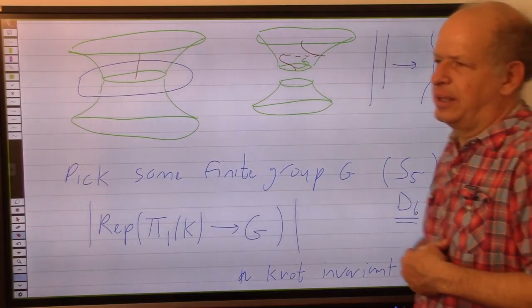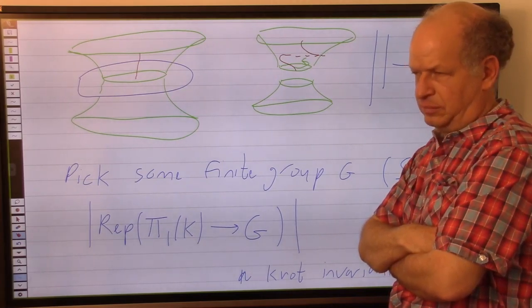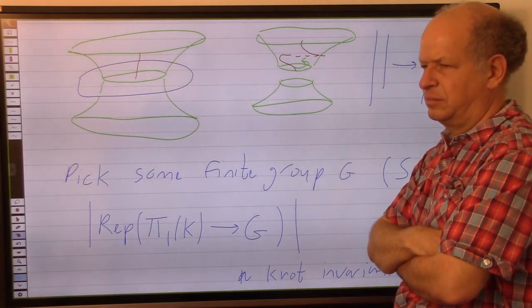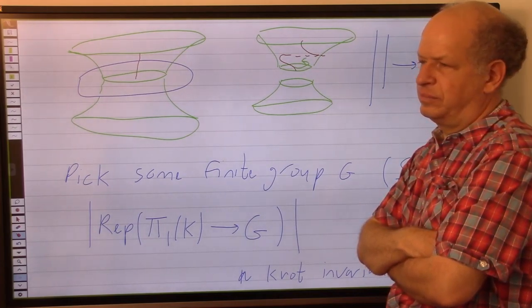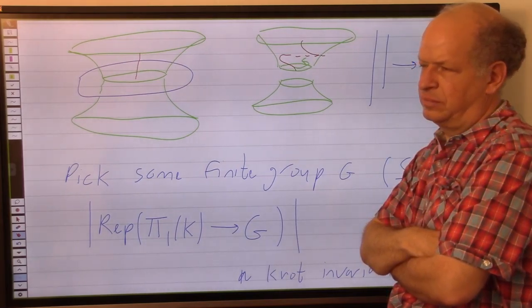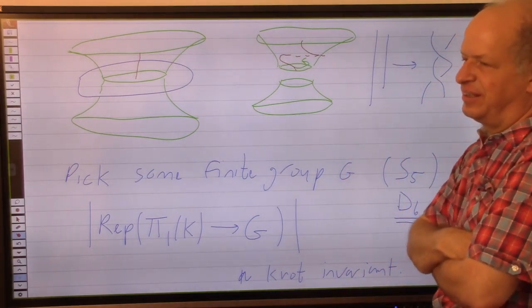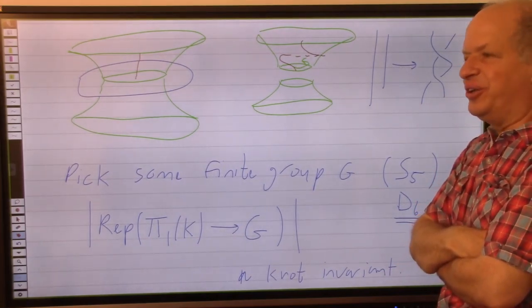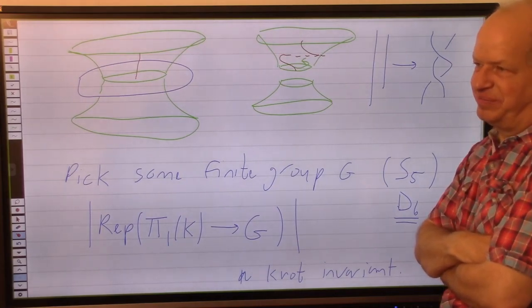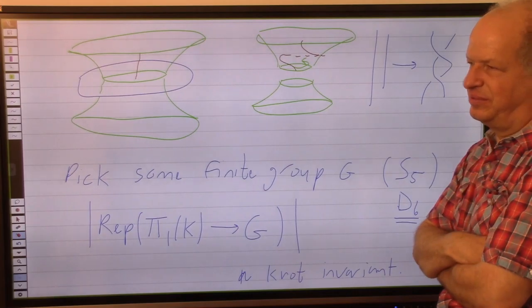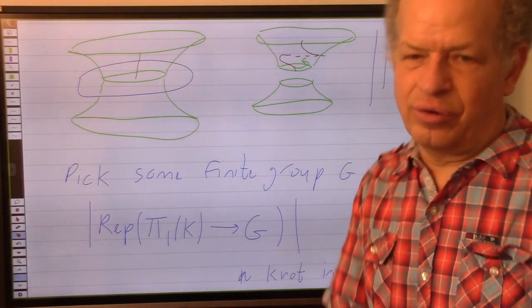One more question: since we know unoriented knots are determined by their complements, and we have what seems like a very general procedure to get homeomorphic complements for different unoriented links — just adding a Dehn twist — is this the only way to get homeomorphic complements for different unoriented links? I don't know. This chapter is kind of outside my comfort zone.